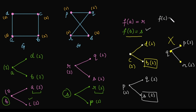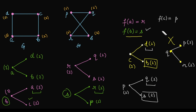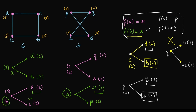So vertex C is mapped with P. The last remaining vertex is D, which maps with Q since Q is the only unreserved vertex in graph H. This completes the mapping: A→R, B→S, C→P, D→Q.